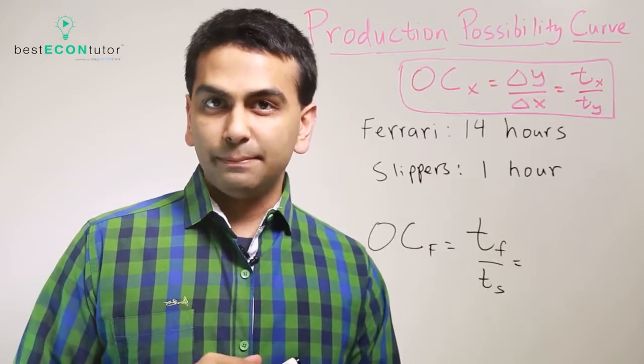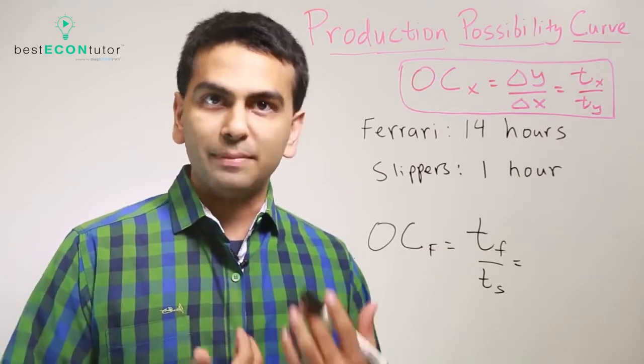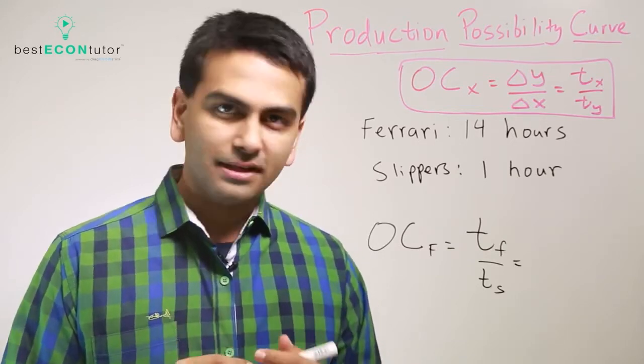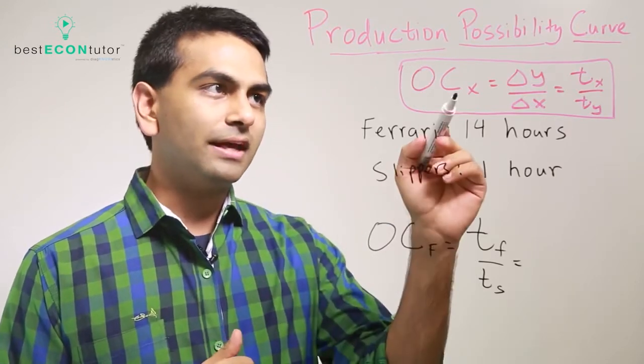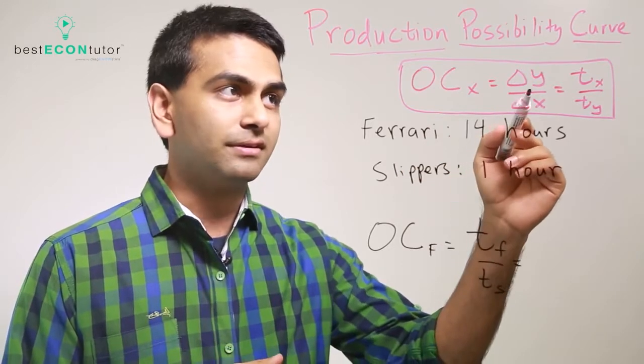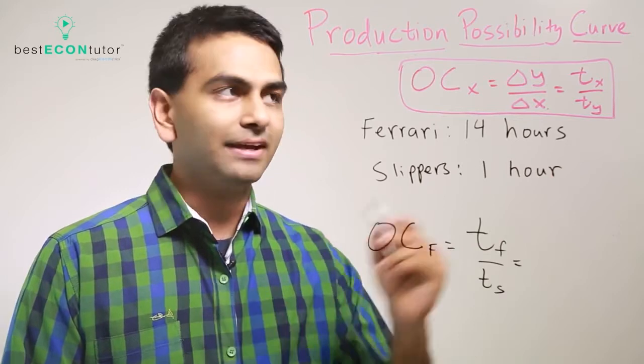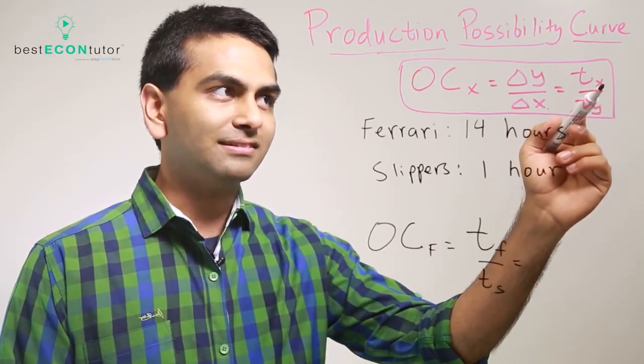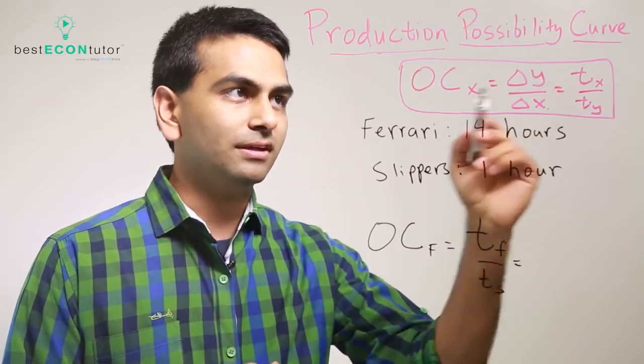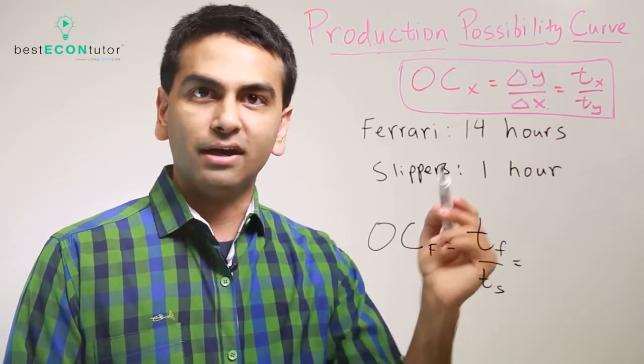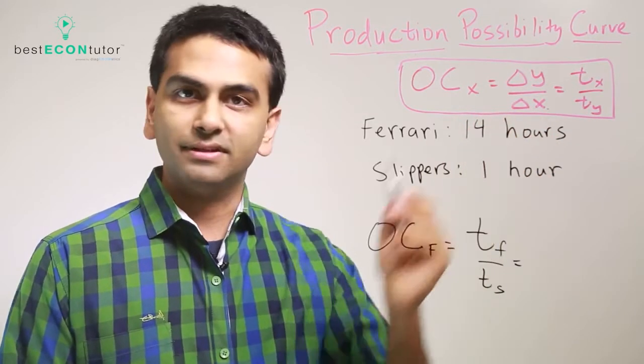One thing to keep in mind, if you're given the values in terms of how many hours it takes to make a good, rather than how many of the goods you can produce, then the opportunity cost is actually measured the other way around. Instead of opportunity cost of X, there's actually two ways to measure it. It's either how many units of Y you're giving up divided by how many units of X, or it's the time it takes to make one item of X over the time it takes to make one item of Y. Notice that the opportunity cost of X, in that case, will have X on top and Y on bottom, if you're given the times as opposed to the number of units where it's the other way around.